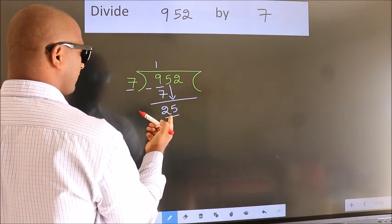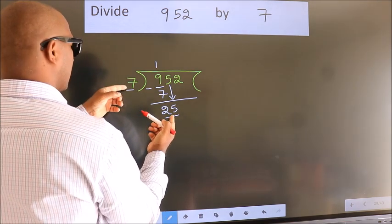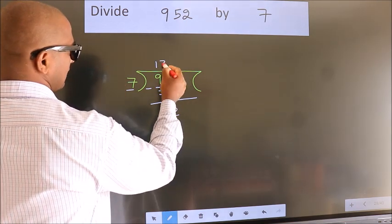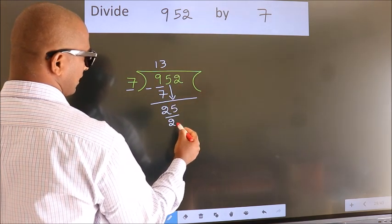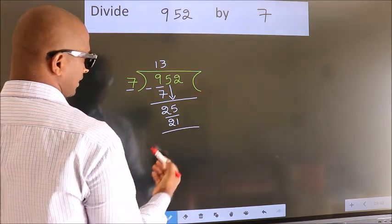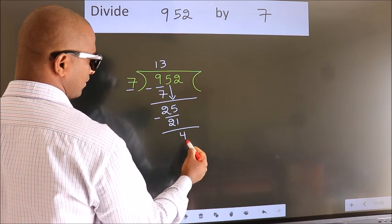A number close to 25 in 7 table is 7 times 3 is 21. Now we subtract. We get 4.